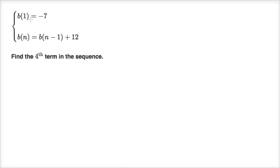We are told b(1) equals negative seven and b(n) equals b(n-1) plus 12. They're asking us to find the fourth term in the sequence.